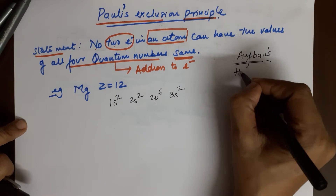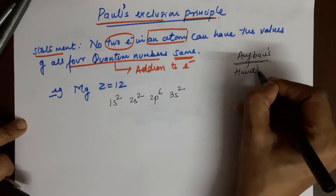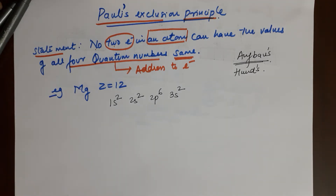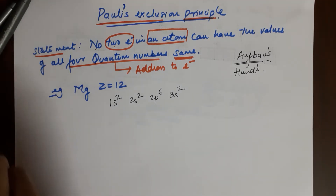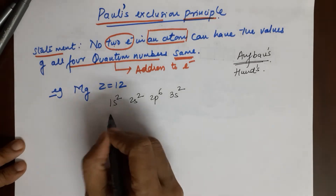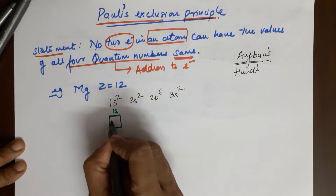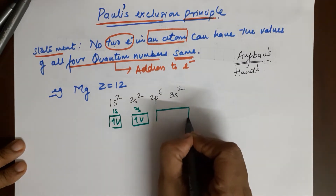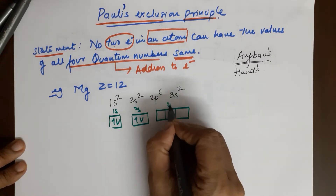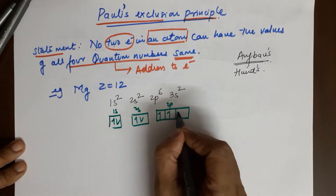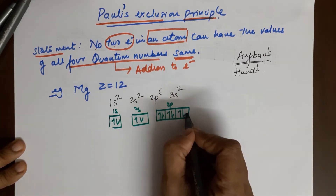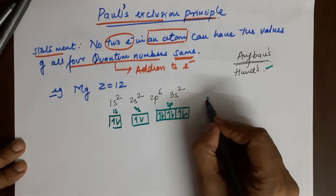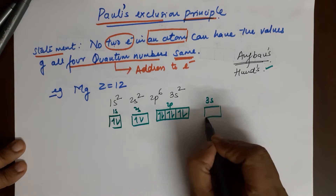You can also look at Hund's Rule of Maximum Multiplicity if you are struggling with these rules of the quantum model. Now let me talk about the box configuration: 1s has 2 electrons, 2s has 2 electrons, 2p always has 3 orbitals — so the 6 electrons fill them as 1, 2, 3, 4, 5, 6, justified by Hund's Rule — and lastly 3s has 2 electrons.